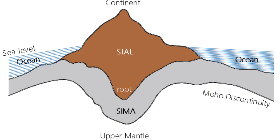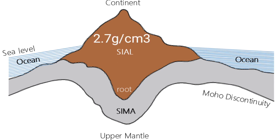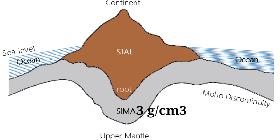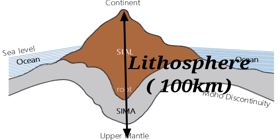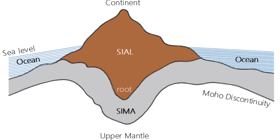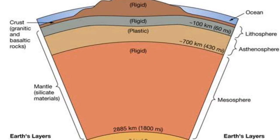SIAL mainly consists of continental landmass, while SIMA mainly consists of oceanic landmass. SIAL is made up of granite with an average density of 2.7 grams per centimeter cube. SIMA is mainly made up of basalt with an average density of 3 grams per centimeter cube. Together, SIAL, SIMA, and the upper mantle form the lithosphere, which extends 100 kilometers deep. The thin layer dividing the crust and mantle is known as the Moho discontinuity.